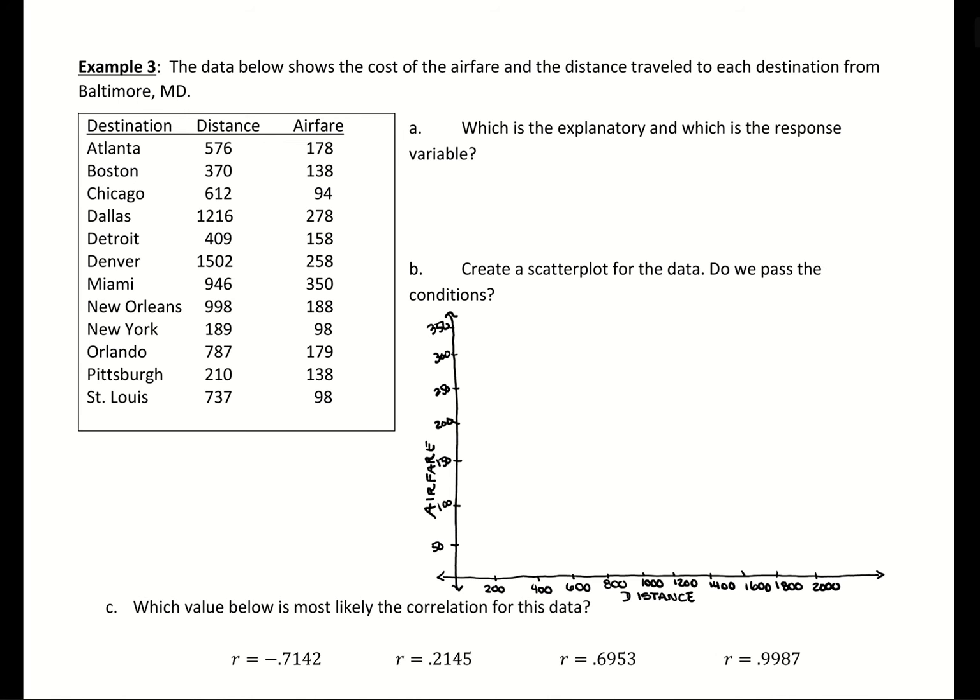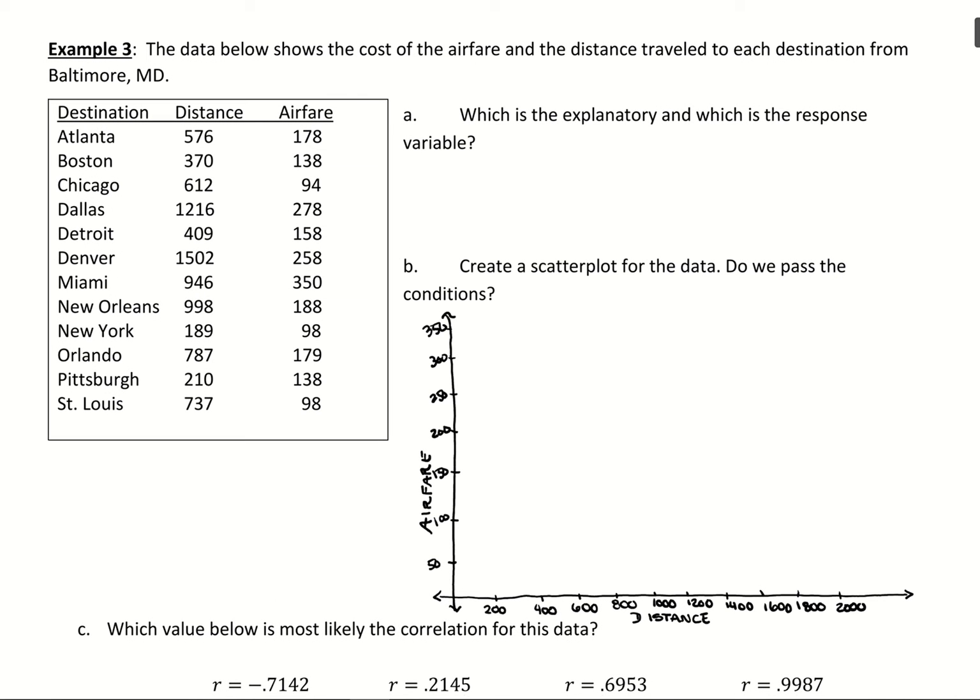Let's look at an example of finding correlation and interpretation. What we have here is data recorded for destinations from Baltimore, Maryland. They took different possible destinations flying out of Baltimore and evaluated the distance away from Baltimore and then the airfare that was paid.